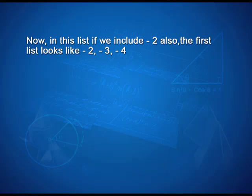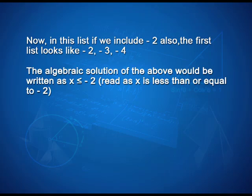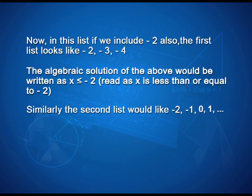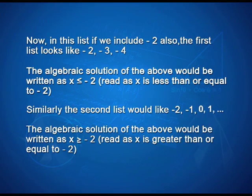Now, if we include -2 in the first list, it becomes: -2, -3, -4, and so on. The algebraic expression for this is written as x ≤ -2. Similarly, the second list including -2 becomes: -2, -1, 0, 1, and so on. The algebraic expression for this is written as x ≥ -2.